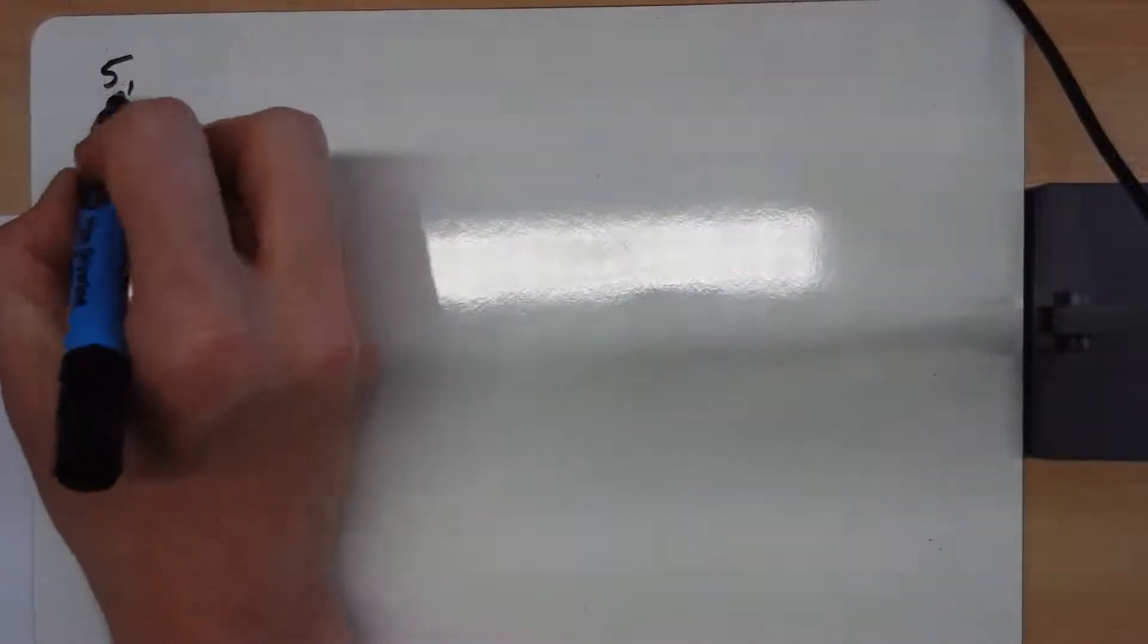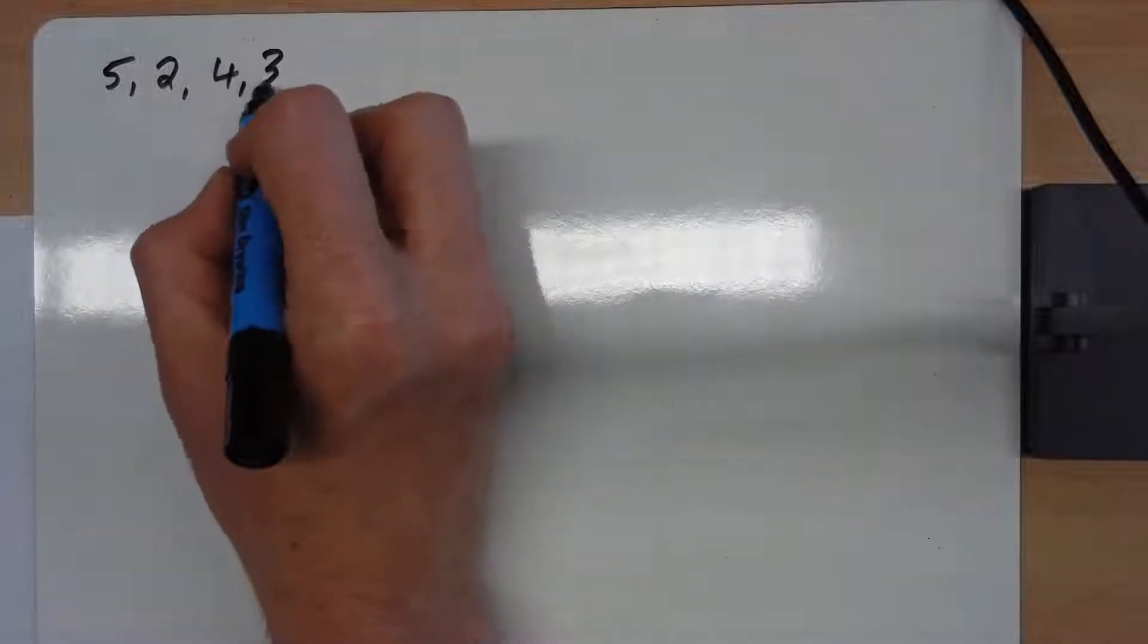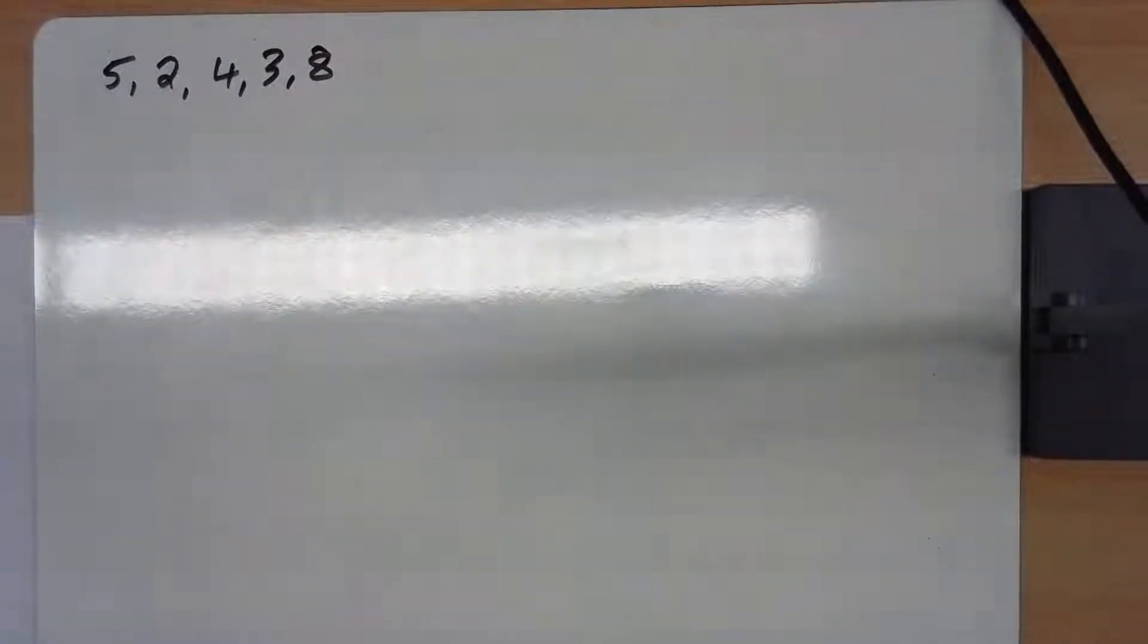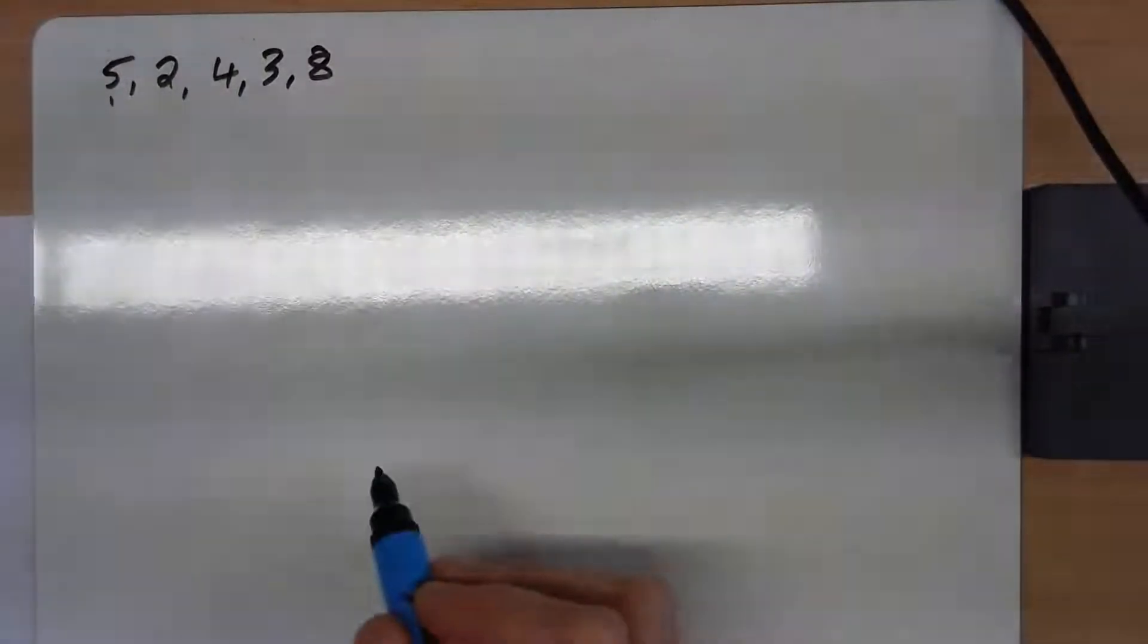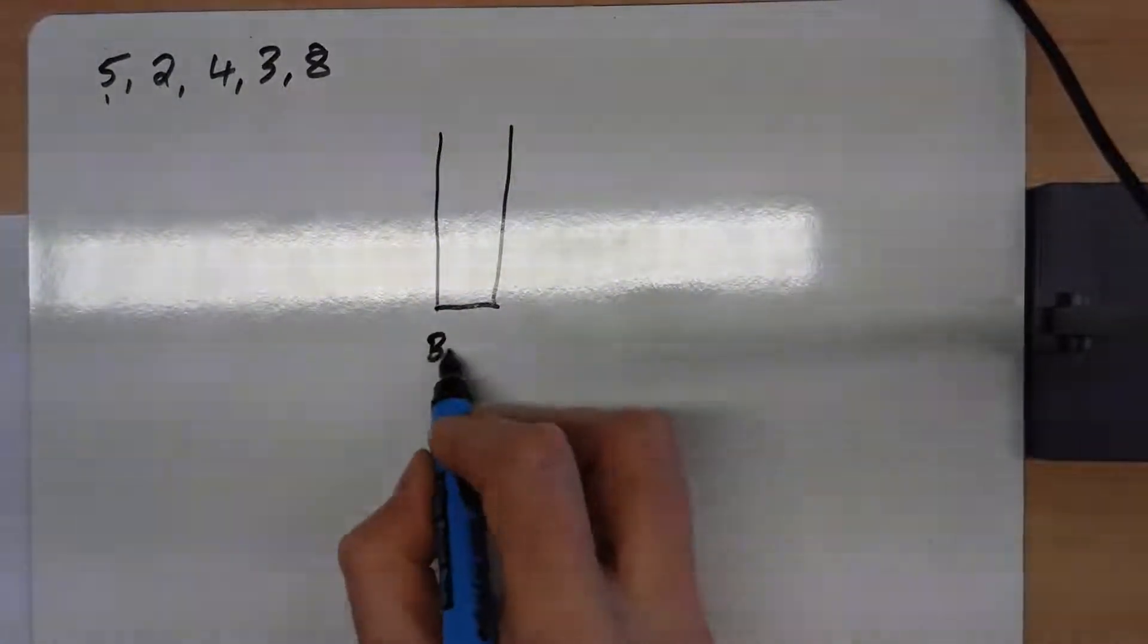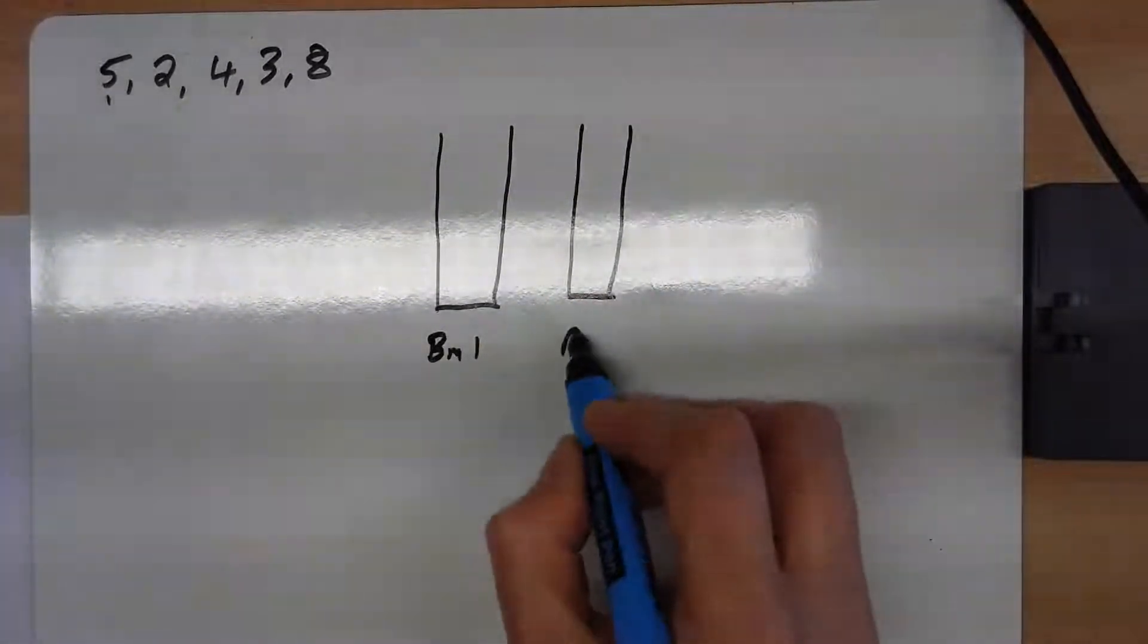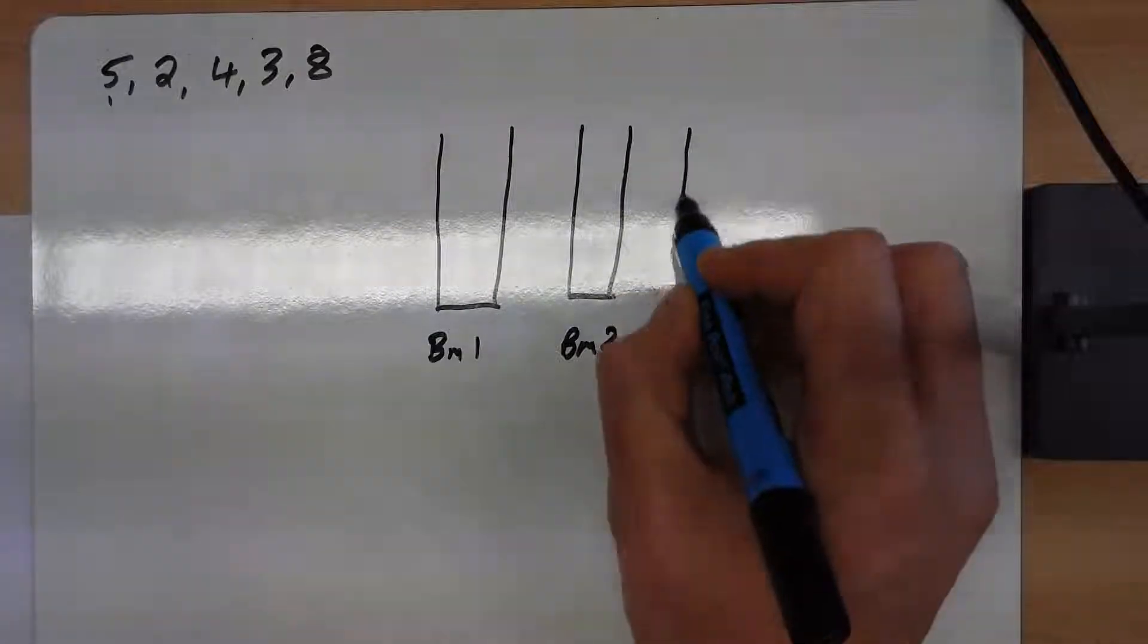We've got a pile of boxes: a 5 kg box, a 2, a 4, a 3, and an 8. The idea is we're going to take them off the top and put them in one of the bins. Here's bin 1, bin 2, and bin 3.